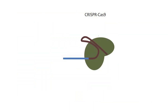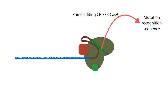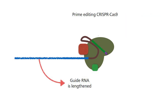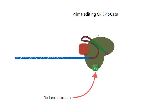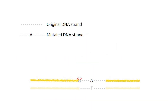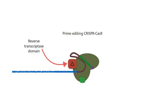So what is prime editing? It involves the same basis of the CRISPR-Cas system, but is modified to enable insertion and deletion mutation corrections. First, the guide RNA is lengthened — not only does it contain the mutated target recognition sequences, it also contains the correction sequence. The whole thing is now referred to as the prime editing guide RNA, or pegRNA. The Cas enzyme domains are also modified, like in the case of base editing, such that only one strand is cut. Finally, instead of the base editing domain, it is swapped out by an enzyme domain with reverse transcriptase activity.